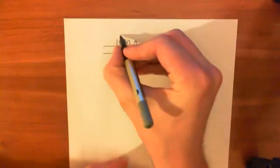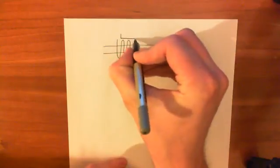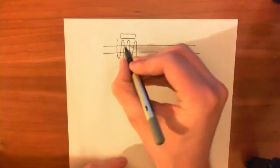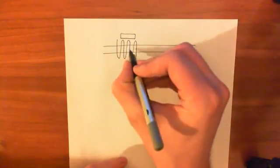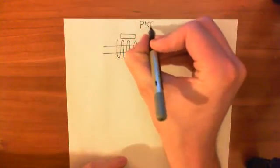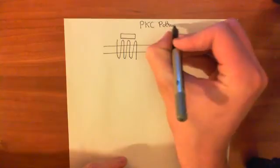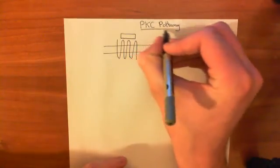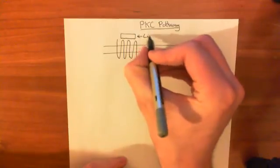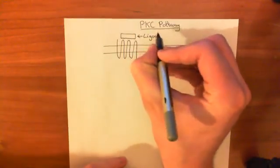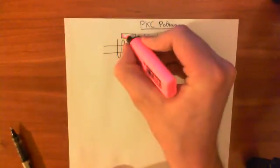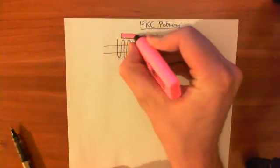Some ligand is going to come along for this G protein coupled receptor. There are absolutely loads of G protein coupled receptors that are going to interact with the protein kinase C pathway, so I'm keeping it nice and generic here. We have our ligand and our G protein coupled receptor that is going to trigger this protein kinase C pathway.